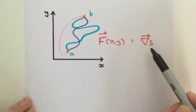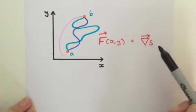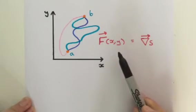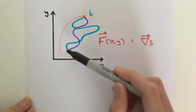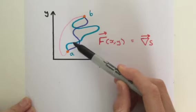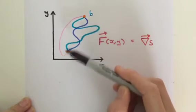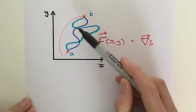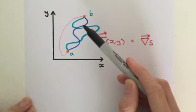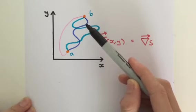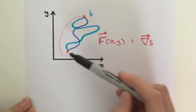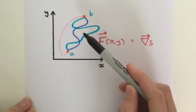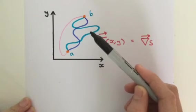So what path independence means is that if you have a vector field that is the gradient of a scalar field, then it doesn't matter what curve you choose from point A to point B. It could be the pink curve, it could be the blue curve, it could be any curve. Path independence means that if you take the line integral of your vector field with your curve, you're going to get the exact same result.